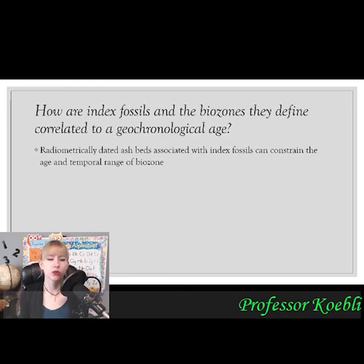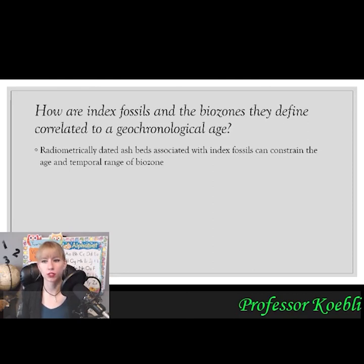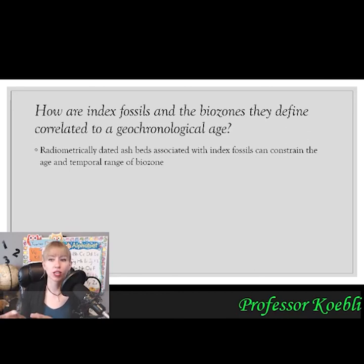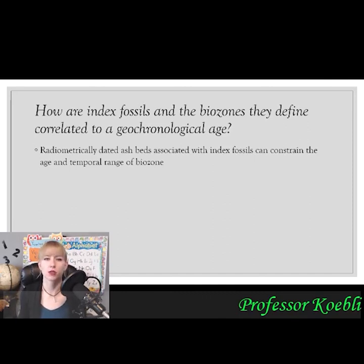How do we correlate index fossils and biozones to an actual age? We use radiometric analysis or geochronology. Scientists radiometrically date ash beds associated with specific index fossils to constrain the age and temporal range of biozones. They find ash beds in stratigraphic columns near fossils and can figure out how old fossils are to about 30 million years. Depending on how old the fossil is determines whether carbon dating can be used. Radiometrically dated ash beds can help identify ages for biozones overall.